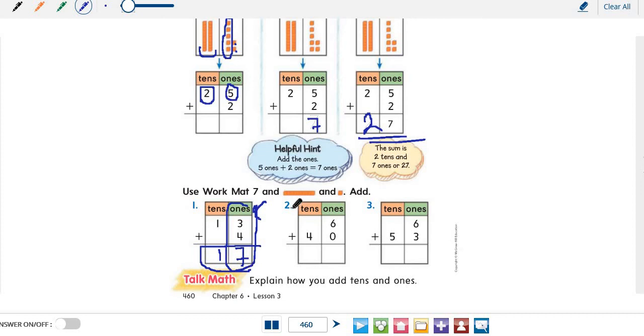Question number 2. Here we have 6 and here we have 40. 6 plus 0 equals 6. 4 plus 0 equals 4. So the sum is 46. Question number 3. Again, we will start with ones. 6 plus 3 equals 9, and 0 plus 5 equals 5. So the sum is 59.